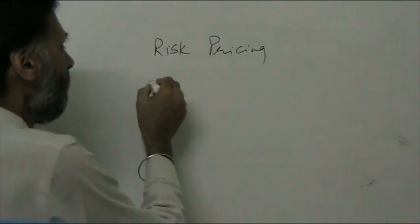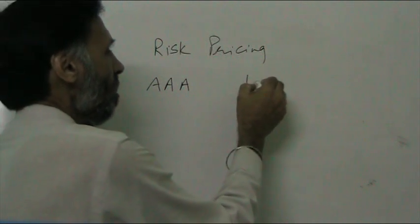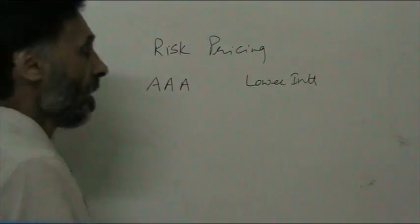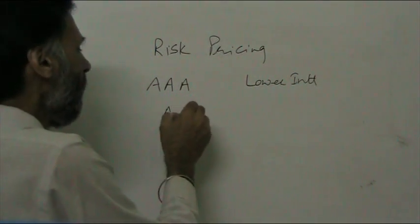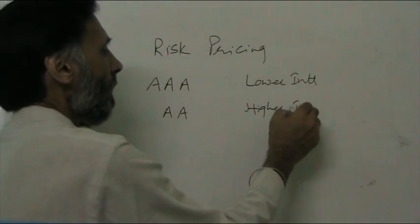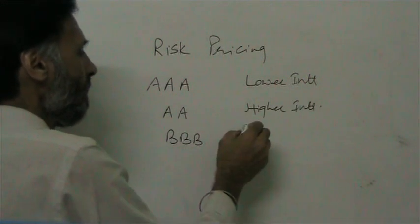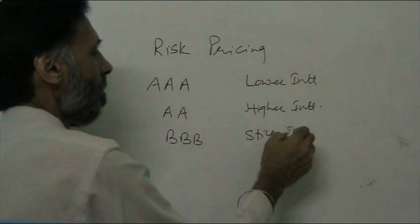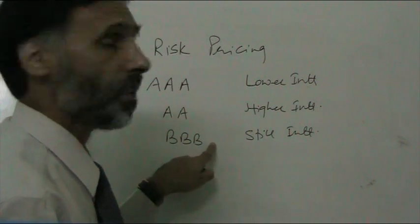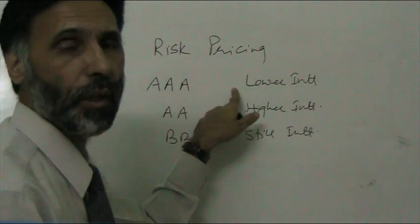For example, in case of credit, a triple-A rated party is charged lower interest, or the prime interest rate. A double-A rated party is charged a relatively higher interest. A BBB party is charged still higher interest. Higher the risk, higher will be the price. Lower the risk, lower will be the price.